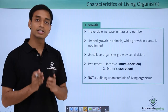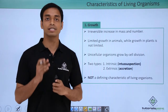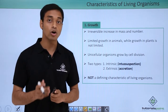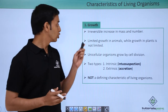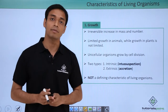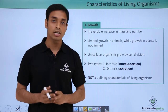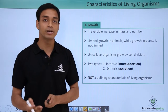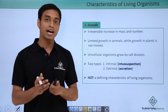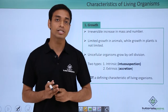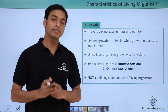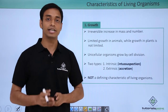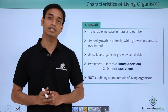The first characteristic we are going to discuss is growth. Growth is the irreversible increase in mass and number. Growth occurs because of cells — when cells divide, mass and number increase. The important point to note is what we mean by irreversible. Irreversible means it cannot be reversed back in the opposite direction.